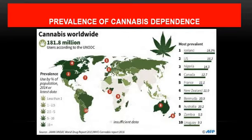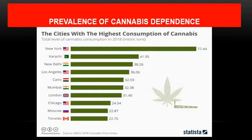A 2004 survey illustrated the global prevalence of cannabis dependence, with spread across European, eastern, and western countries. A 2018 survey of the most affected cities found New York to be the most affected city, followed by Karachi, New Delhi, and other cities in populous countries.